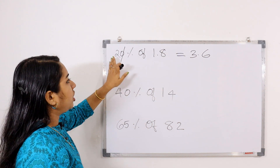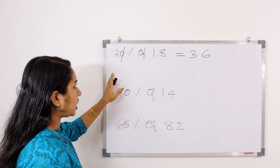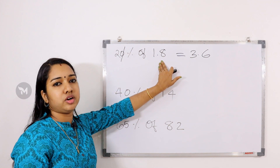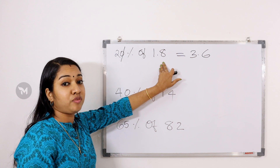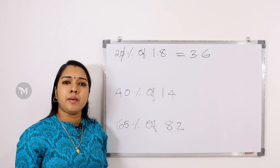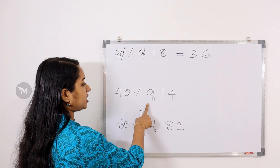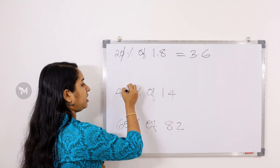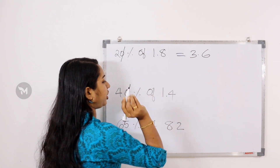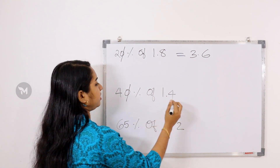Now for 40% of 40: if we add a zero here, there is a decimal point here. 4 into 40 — if you look at the same number, 4 into 4 is 16. Then place the decimal point to get 16.